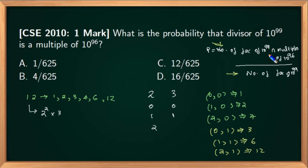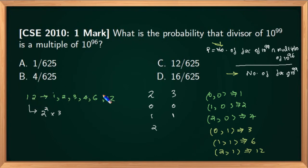So how do you find the number of factors of a particular number? Suppose I take the number 12. 12 has these numbers as divisors because when you divide 12 by any of them you get no remainder — these are factors of 12. For 10 raised to 99 I need a systematic method. Now 12 can be written as 2 squared into 3 — these are the prime factors of 12. 2 raised to 2 is 4, and 4 into 3 is 12.